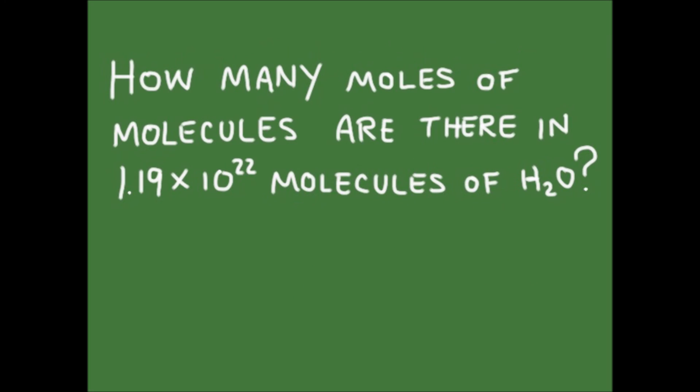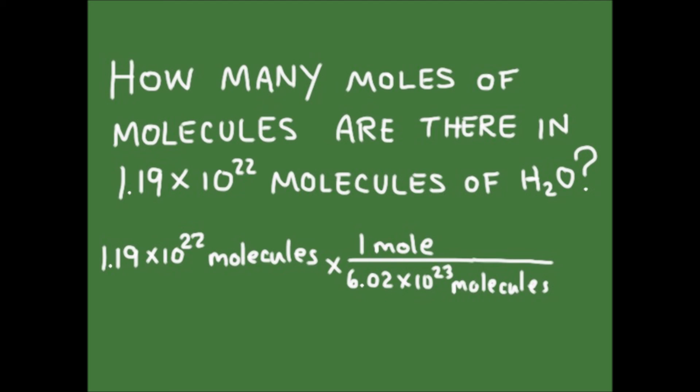Okay, let's try one more. How many moles of molecules are there in 1.19 times 10 to the 22 molecules of water? So in this case, we're going to take 1.19 times 10 to the 22 and divide it by 6.02 times 10 to the 23. Once again, I've set this up using these conversion factors so that the units of molecules are going to cancel.